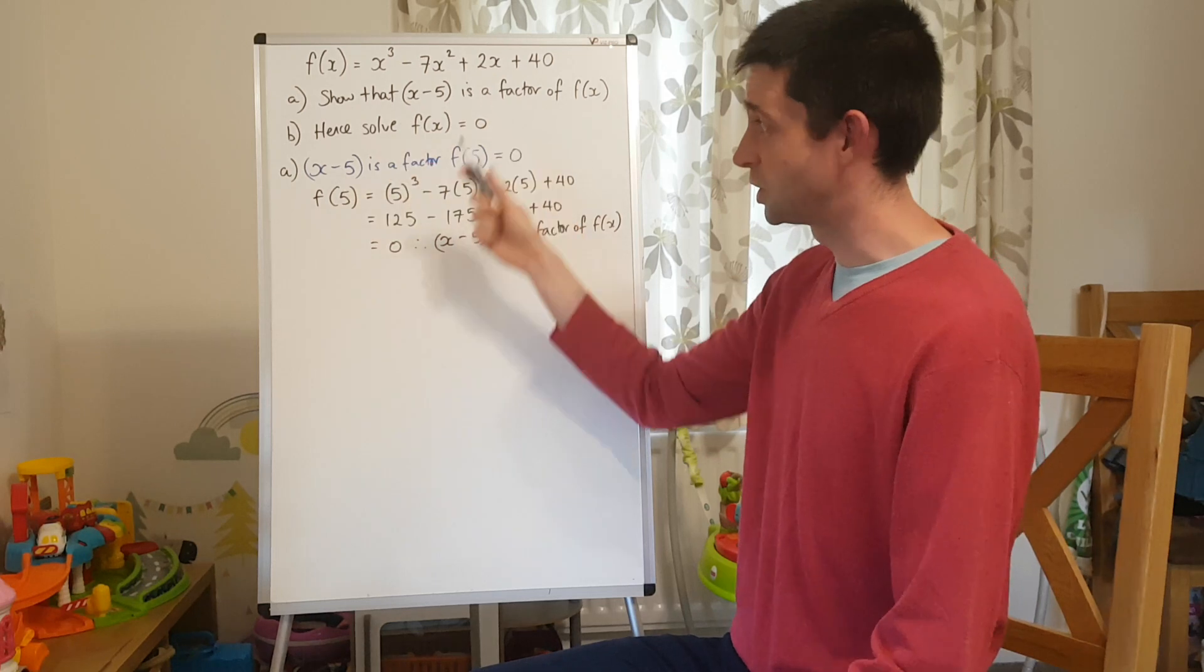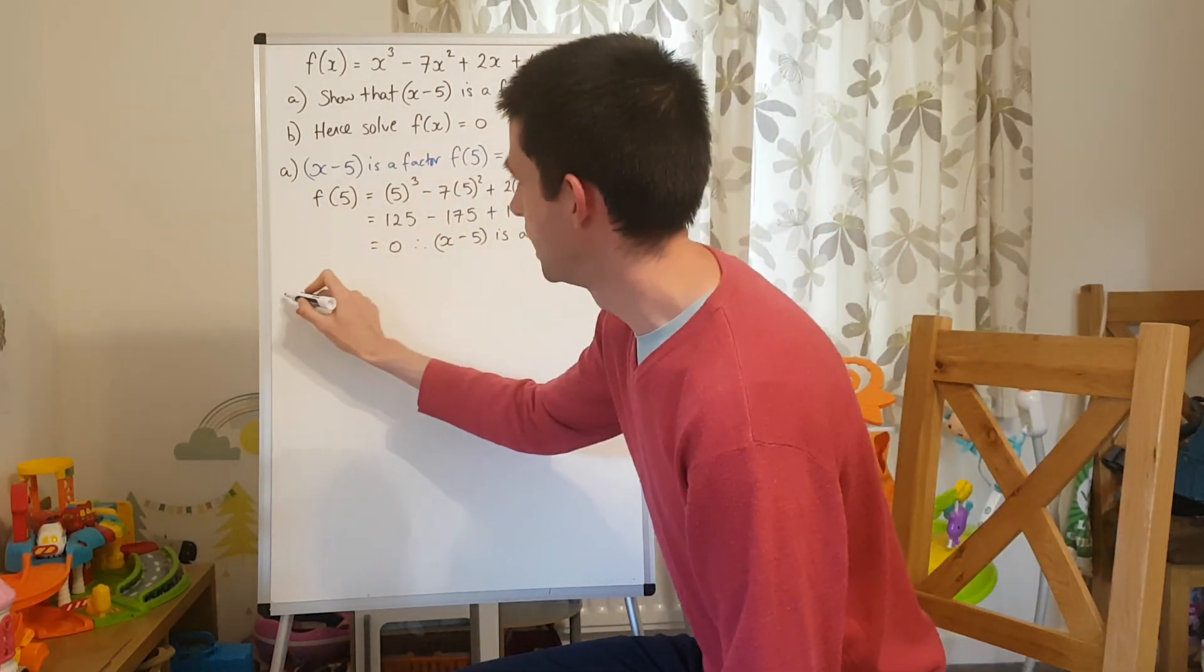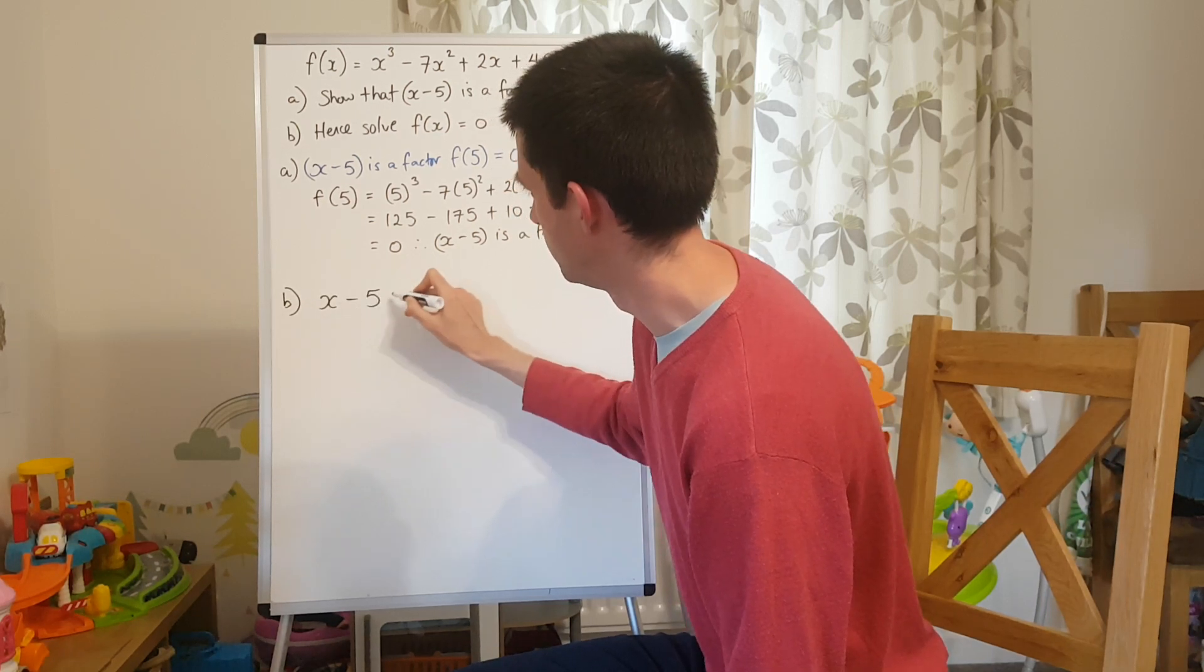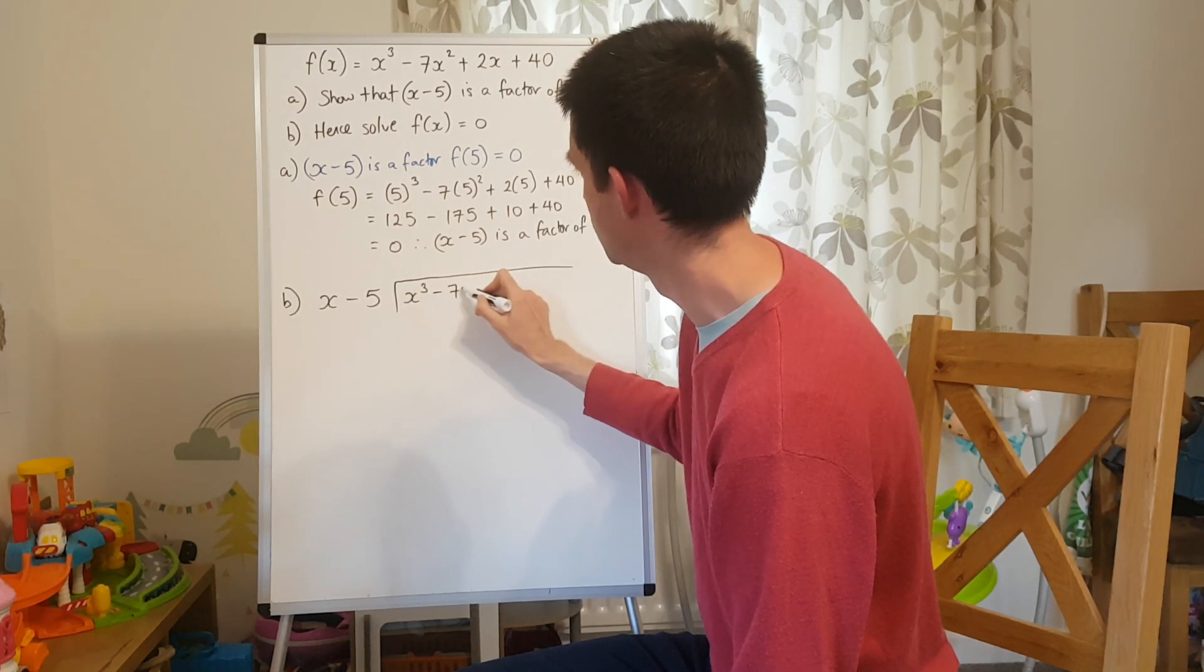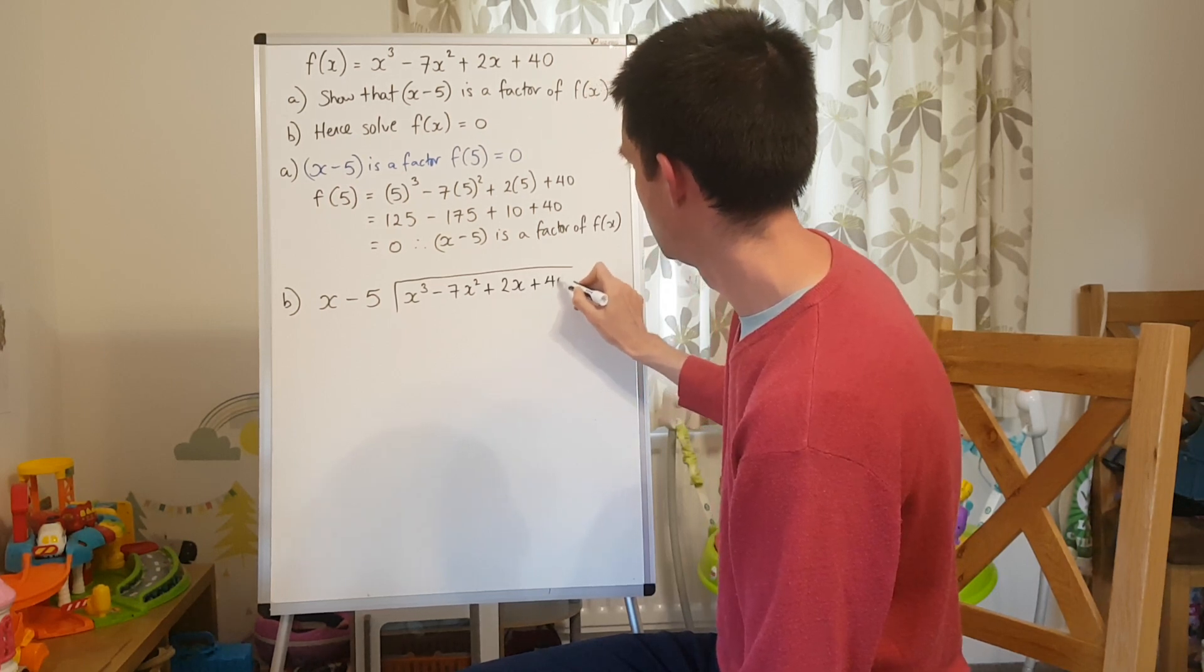Now, in part B we're trying to solve it, which means, first of all, we've got to factorize it fully. And to be able to do that, we've got to crack out the old algebraic long division. But we should be absolutely pro at doing this by now, so I'll rattle through this at a decent pace without too much explanation.